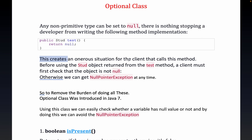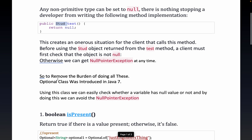This creates an onerous situation for the client that calls this method. Suppose we have developed an API and our method is returning null — every time we have to mention it in Javadocs or keep a comment that this method can return null, so the caller should handle this scenario using a null check. Otherwise we will be getting a NullPointerException.